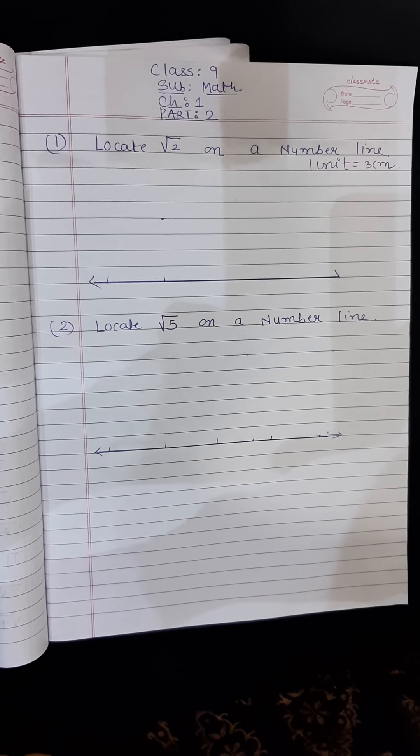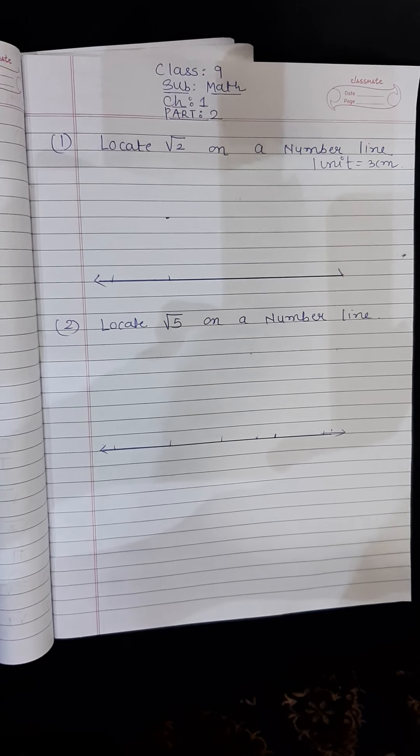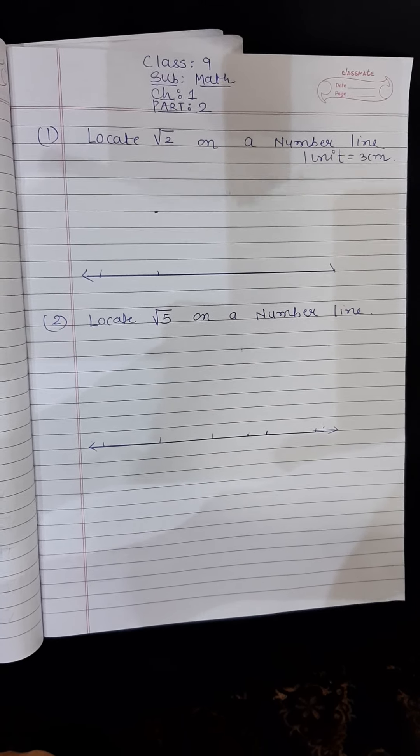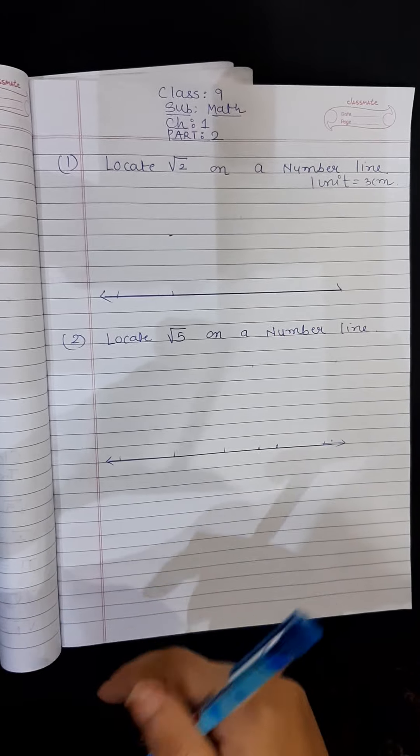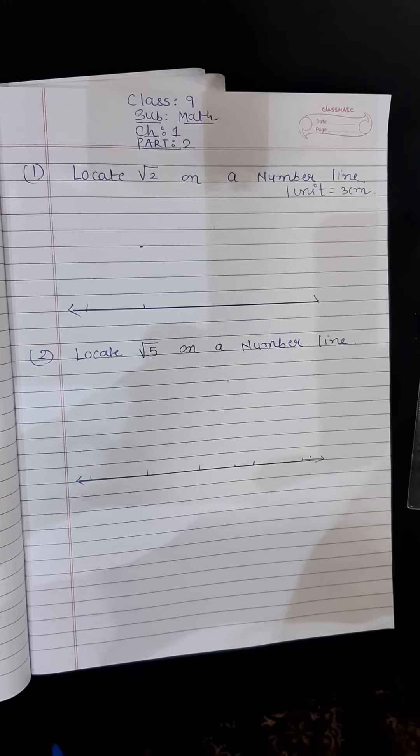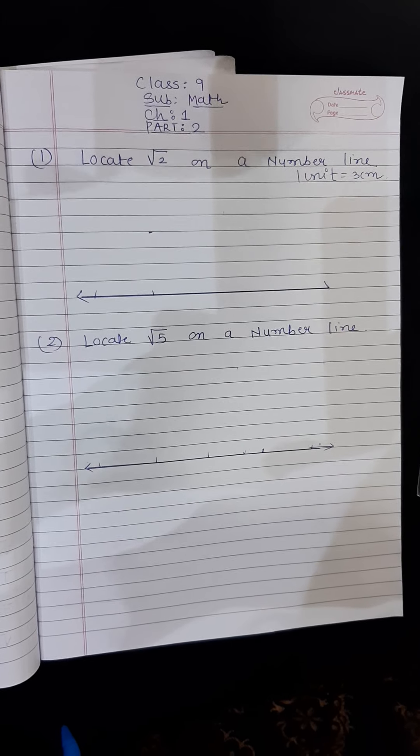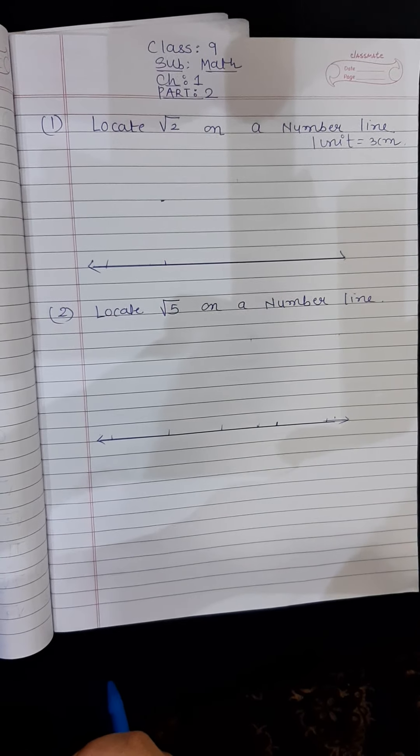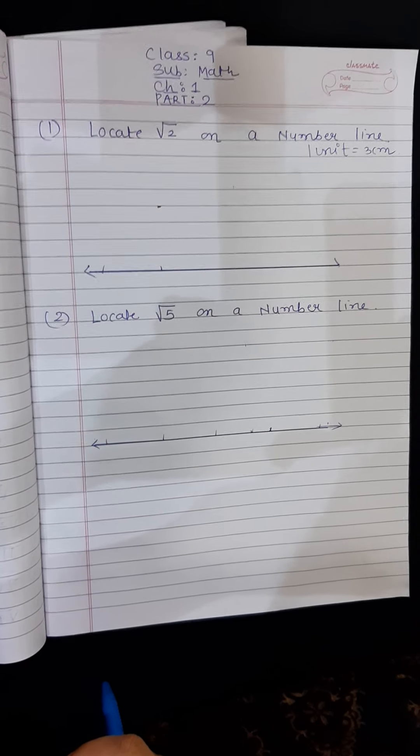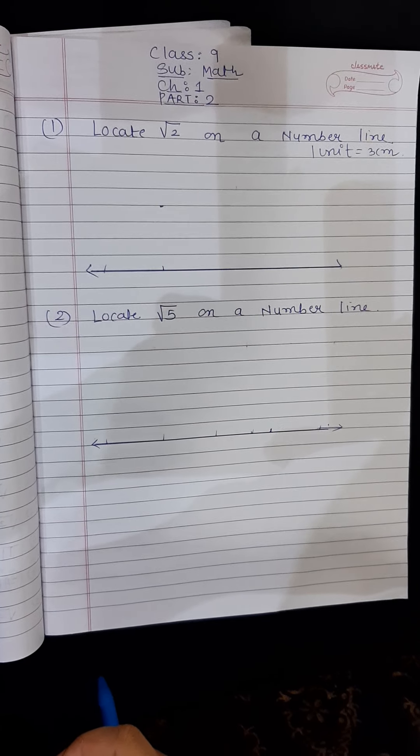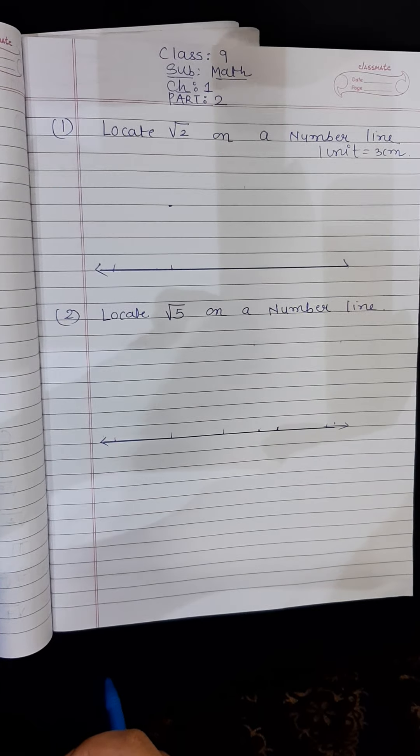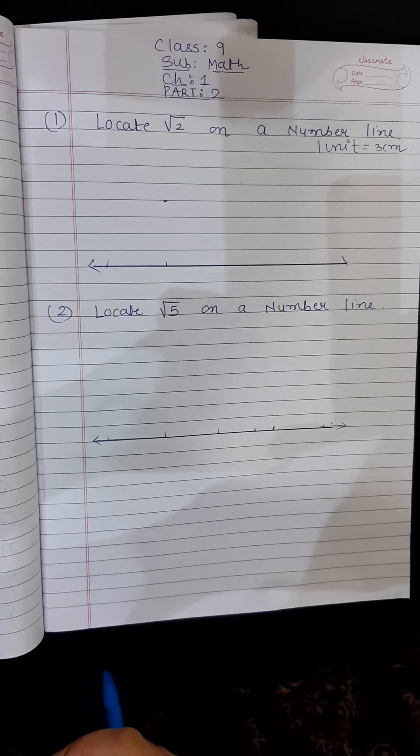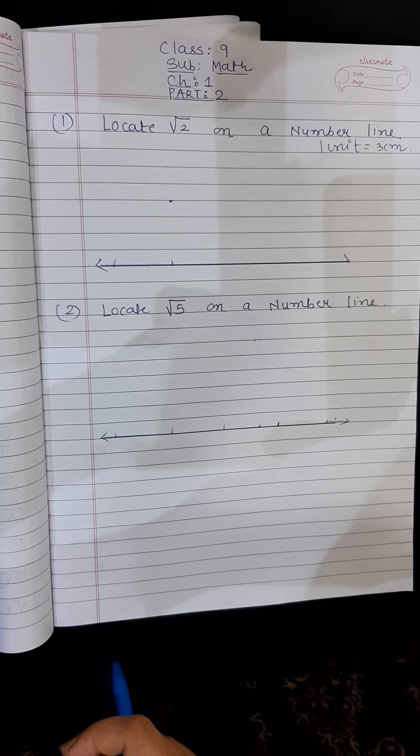Good morning students. So here I have brought a very important part, part 2 of textual exercises which is based on exercise 1.1 and 1.2. Now this is very important. Please kindly pay attention here. One of the questions is asked either locate root 2, root 3, or root 4 on the number line, or root 5, root 6, root 7. So we will have both the practice. Now this is class 9, subject maths, chapter 1, part 2. Let's begin.